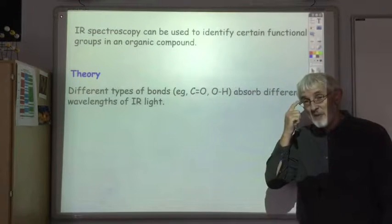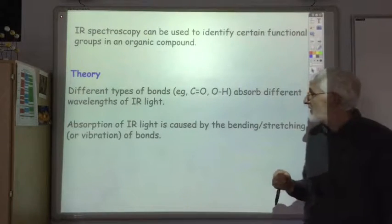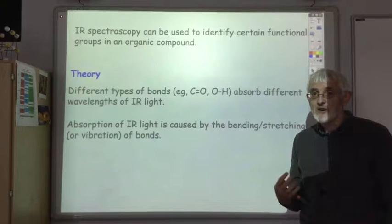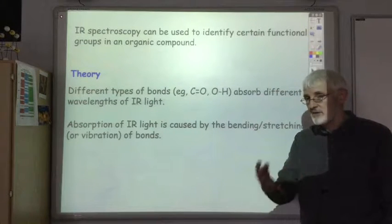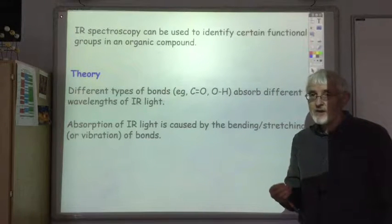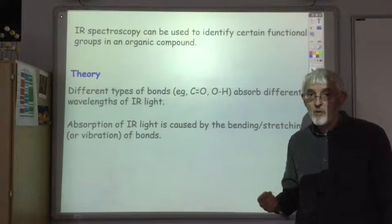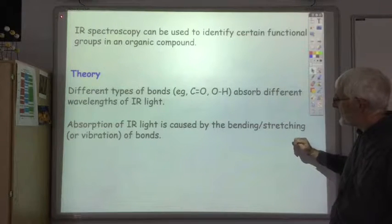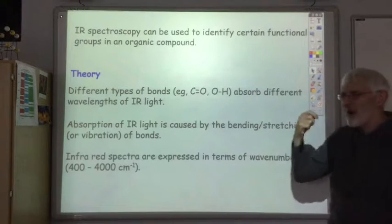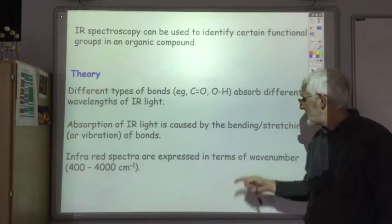So how do the bonds absorb infrared light? The infrared light causes the bending and stretching of these bonds, and it allows them to absorb light of the appropriate wavelength. So what you really need to remember for the theory is that the absorption of IR light is caused by the bending and stretching of the bonds. They don't give you the wavelength of the IR light that is absorbed — they give you the wave number.